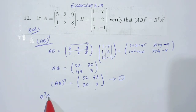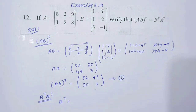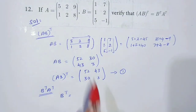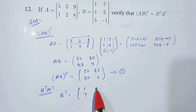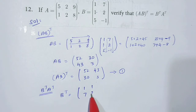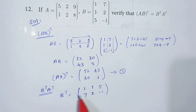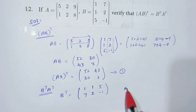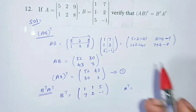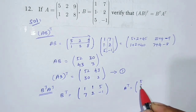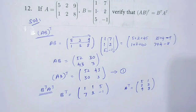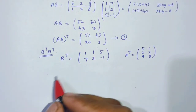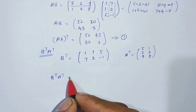Next, B transpose into A transpose. First, B transpose: B matrix row becomes column — [1, 2; 7, 5; 1, -1]. Next, A transpose: A matrix row becomes column — [5, 1; 2, 2; 9, 8]. Okay. Now substitute B transpose into A transpose value.